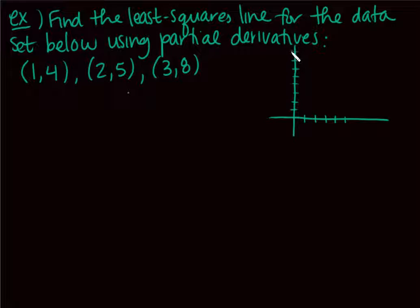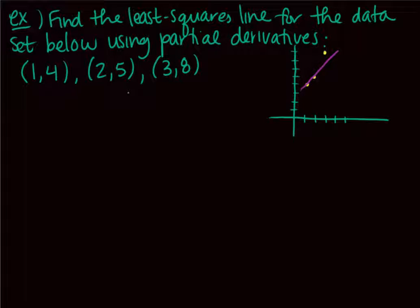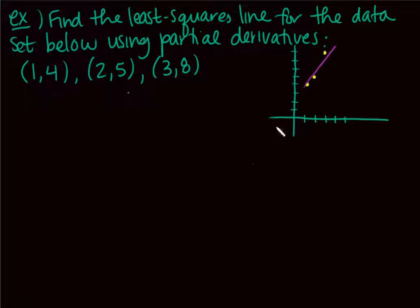I'm going to use three points. Let's look at where they are: (1, 4) is right here, (2, 5) is just up one, and (3, 8) is all the way up here. If I eyeball a line of best fit, I can see it will have a positive slope and a y-intercept somewhere between 1 and 3.